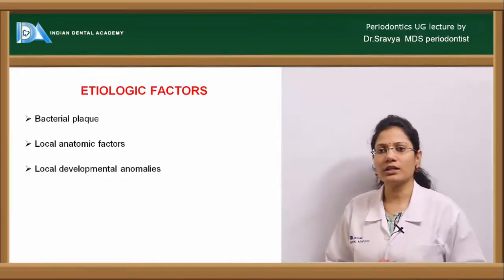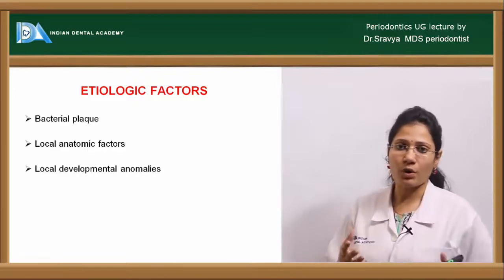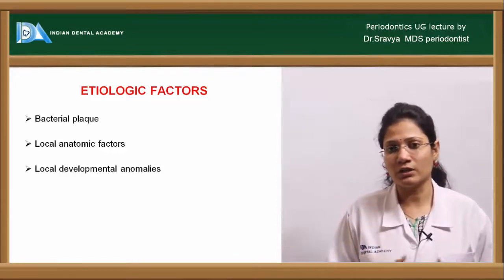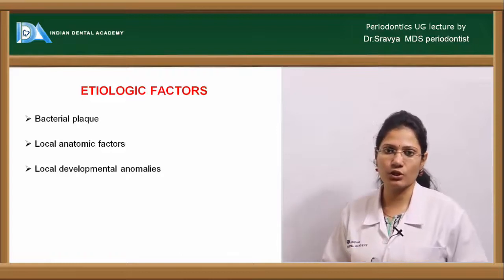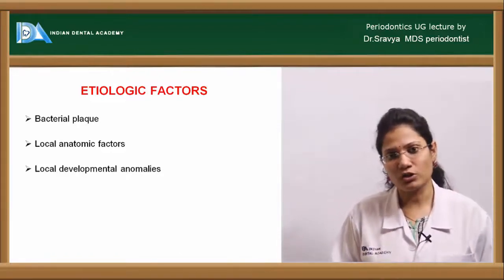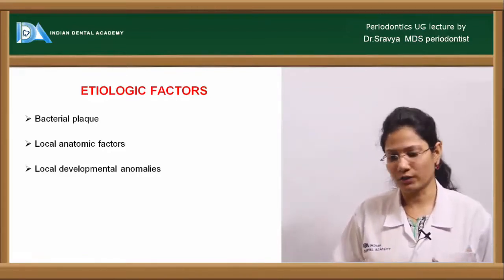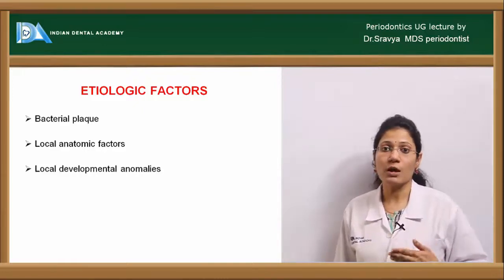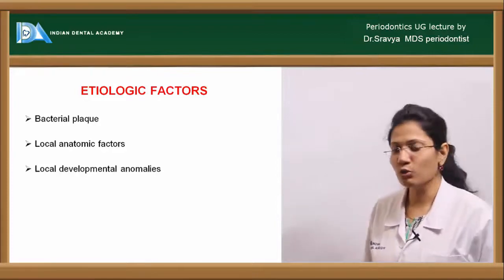The third etiological factor includes developmental anomalies such as furcation grooves, accessory canals that can cause endo-periodontic lesions, enamel projections, and bifurcation ridges. All these complicate the furcation area, making it more conducive for plaque accumulation and thereby leading to periodontal tissue breakdown.